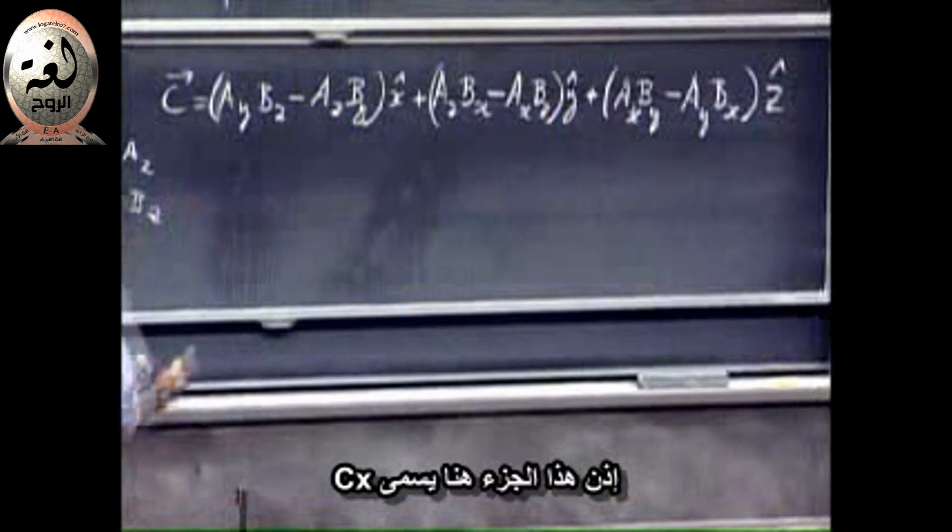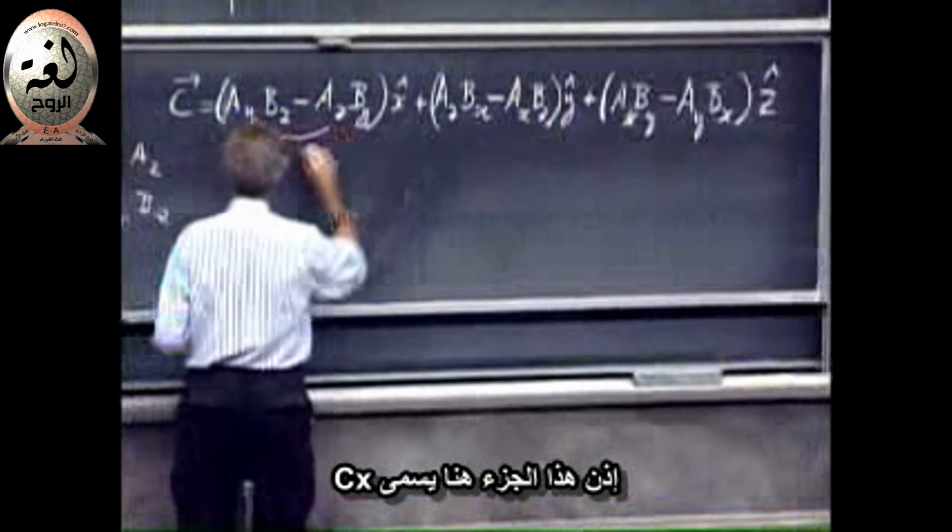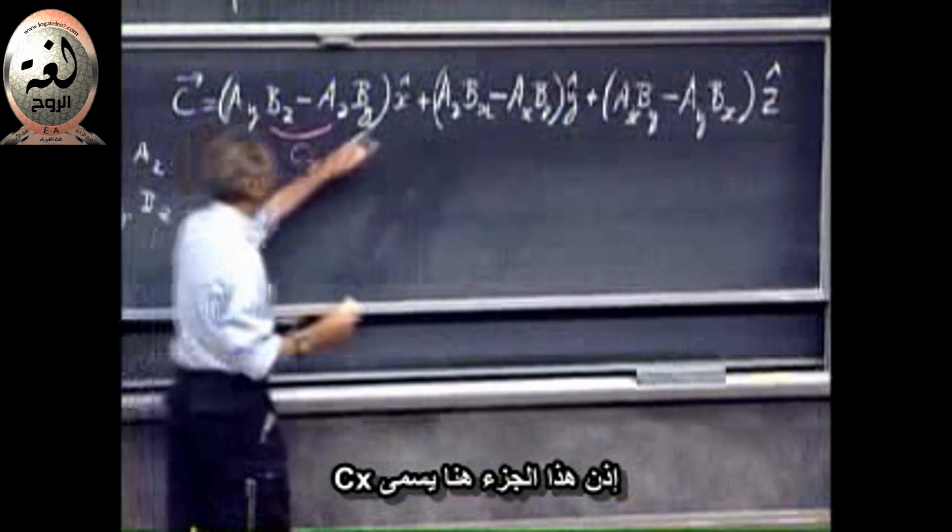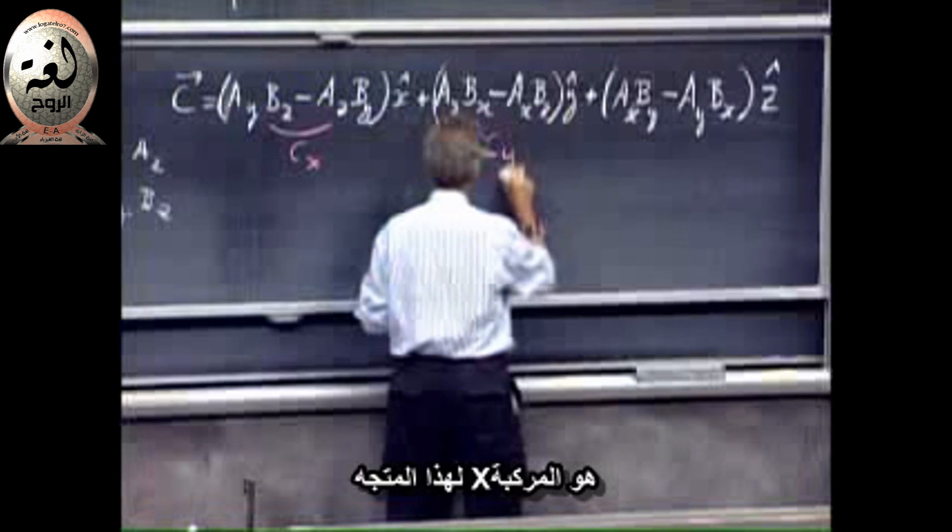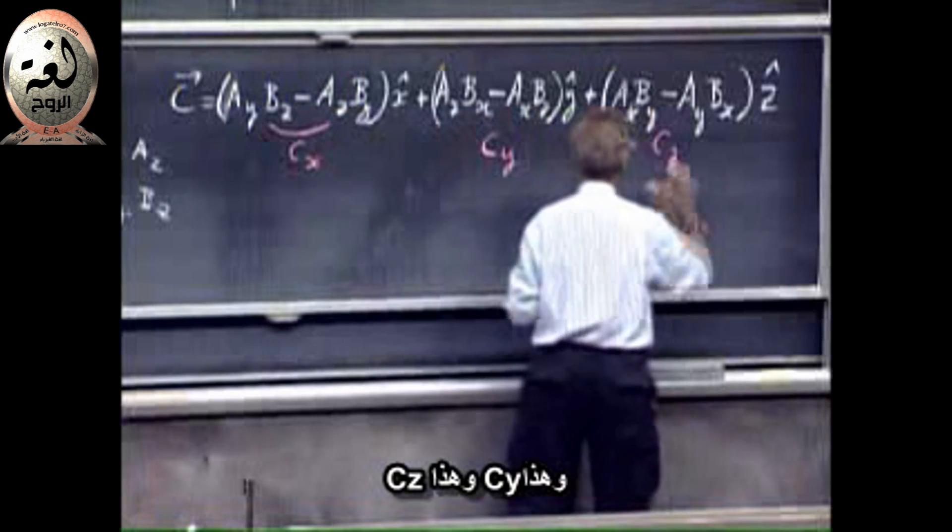So this part here is what we call C of X. It's the X component of this vector. And this we can call C of Y, and this we can call C of Z.